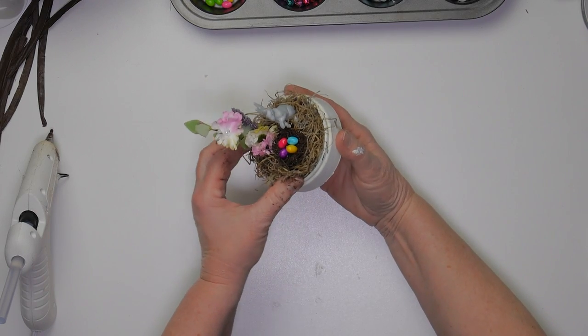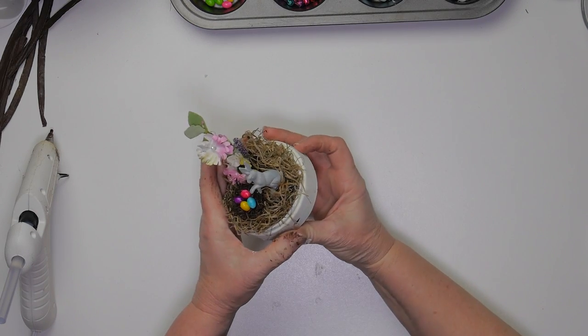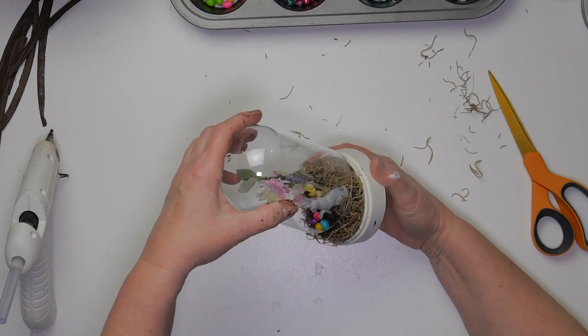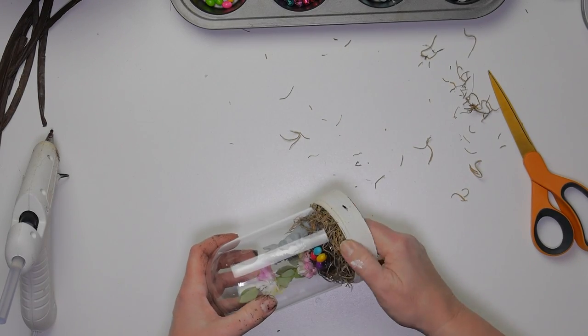I did end up trimming some of the Spanish moss around the sides here because it was sticking out once I put the cloche top back on.